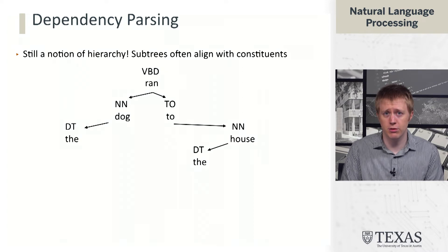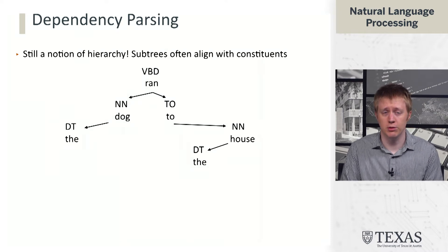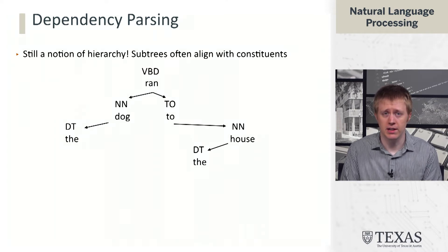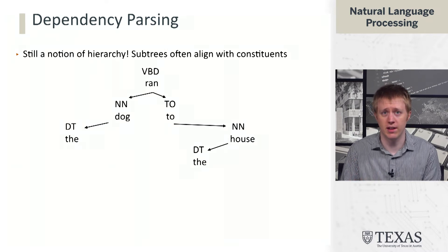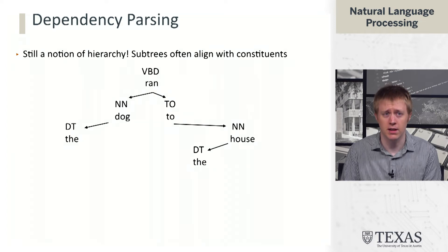Similarly, 'to the house' is a subtree rooted at 'to,' rooted at a preposition — essentially a prepositional phrase. The one constituent we're missing is the verb phrase. Dependency syntax does not posit the existence of a verb phrase in the same way. Instead, the subject and indirect object of a verb are both treated symmetrically. That's one big difference representationally between dependencies and constituency.